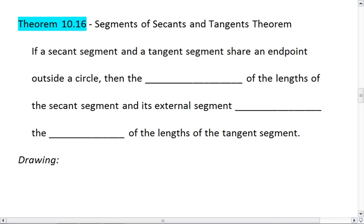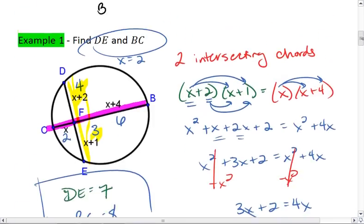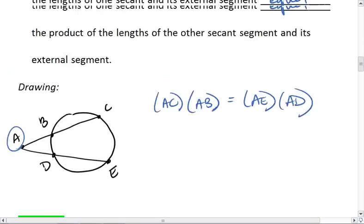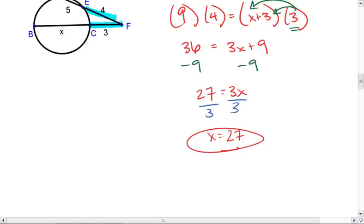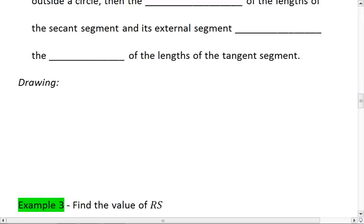Theorem 1016 is looking at segments of secants and tangents. So let's look at this real quick. First, we looked at chords and how their segments are related. Then we looked at secants and how their segments are related. Now we're going to look at a secant and a tangent. So we're going to look at what happens when we have a tangent that meets up with a secant.